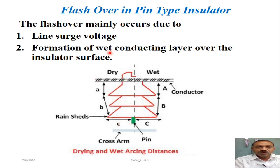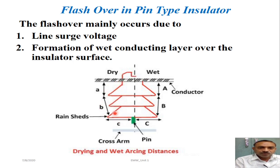The second cause is the formation of the wet conducting layer — a phenomenon that usually takes place during rainy seasons or when the air contains high moisture. The moisture represents the presence of water molecules in the surrounding air. When air is dry, a flashover has to cover distance A, then distance B, then distance C — the total leakage path along the full surface of the insulator including all petticoats. This length is very large, requiring very high voltage to produce flashover, which is not possible at normal operating voltage.